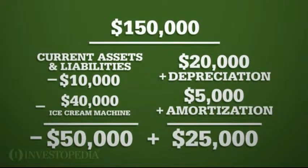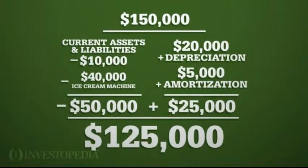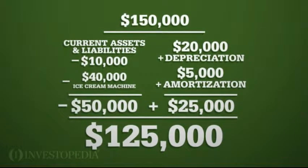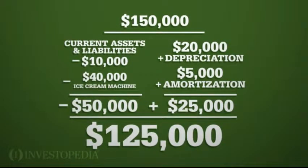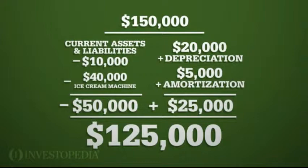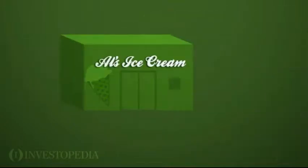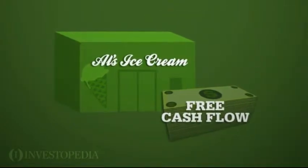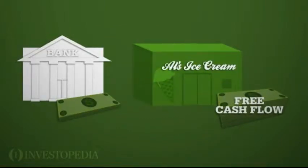This brings Al's free cash flow to $125,000: $150,000 minus $50,000 in working capital and capital expenditure outlays, plus $25,000 in depreciation and amortization.